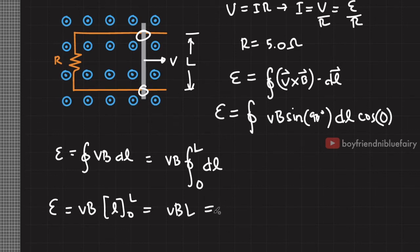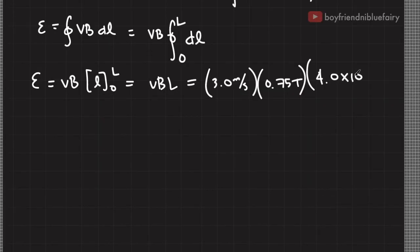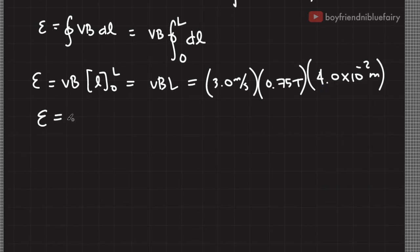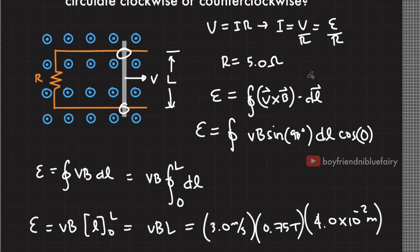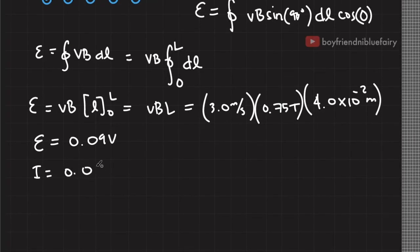Plugging in the values, I have 3 meters per second times 0.75 Tesla times a length of—I forgot to write the given—L is equal to 4 centimeters. So calculating for induced EMF, it is equal to 0.09 volts. Using Ohm's law, current is equal to 0.018 Ampere.